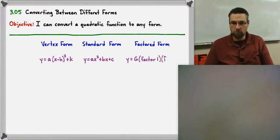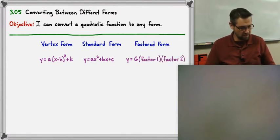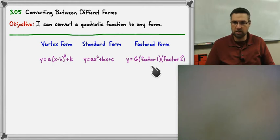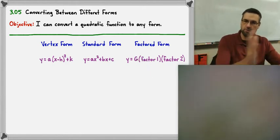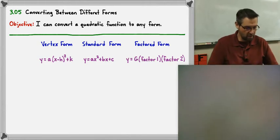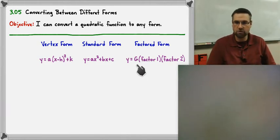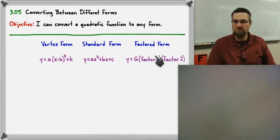In factored form, you have your GCF — whatever your greatest common factor was out of all three terms, you take that out and factor it first, and then you factor the remaining trinomial, giving you factor one and factor two.